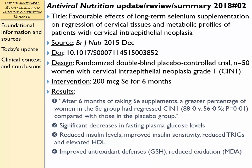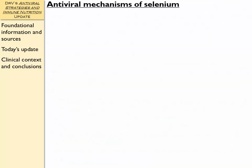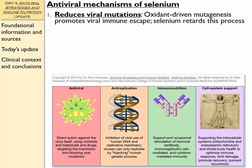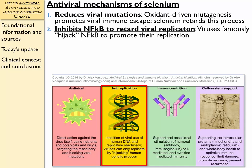They also showed improved antioxidant defenses with elevated glutathione and a reduction in oxidative stress markers, and excellent safety from 200 micrograms of selenium for 6 months. Regarding antiviral mechanisms of selenium: first, selenium reduces viral mutations — oxidant-driven mutagenesis promotes viral immune escape, and selenium clearly retards this process. Second, selenium inhibits the NF-κB pathway to retard viral replication. Viruses famously hijack this NF-κB pathway to promote their own replication, so selenium provides a direct antiviral effect and also blocks viral replication.